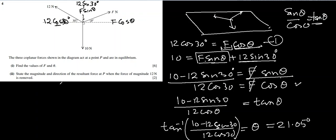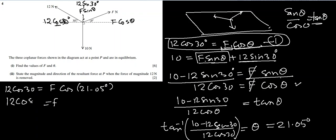Now, the second part we have to find F also. So now we can use this equation. This first equation we can find F because we know theta now. So 12 cos 30 equal to F cos 21.05 degrees. So F becomes 12 cos 30 over cos 21.05 degrees. And if I use my calculator, I get 11.1 Newton.